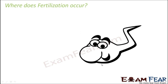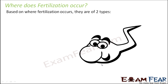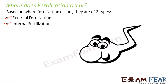Now the question is: where does this fertilization occur? Based on where fertilization occurs, there are two types. Fertilization can occur inside the body or outside the body. The first type is external fertilization and the second is internal fertilization.